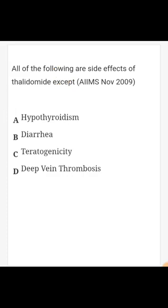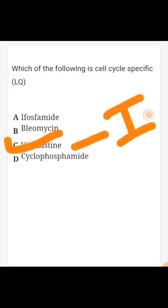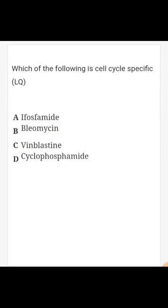Which of the following is a cell cycle-specific anti-cancer drug? The answer is vinblastine. Vinblastine is a vinca alkaloid and an M-phase specific cell cycle inhibitor. It causes metaphase arrest by blocking mitotic spindles, and is useful for rapidly dividing tumors such as blood cancers and reproductive carcinomas.